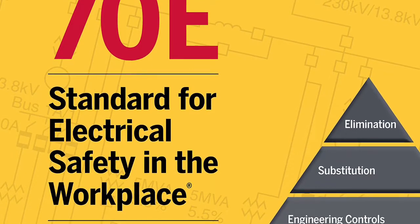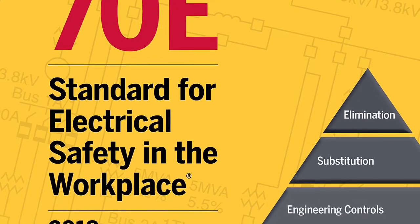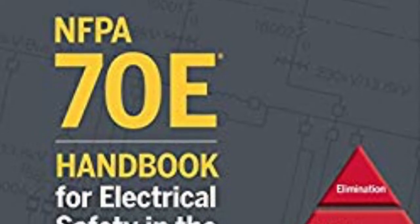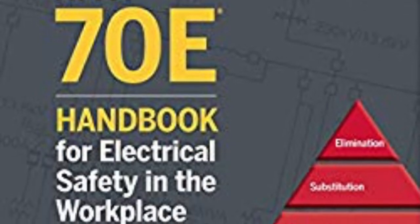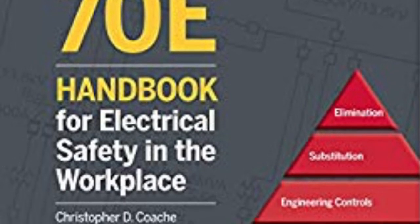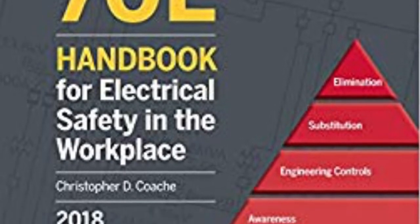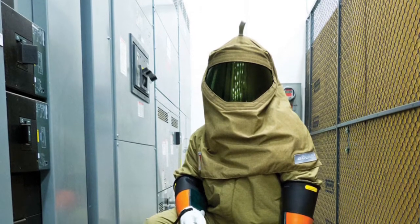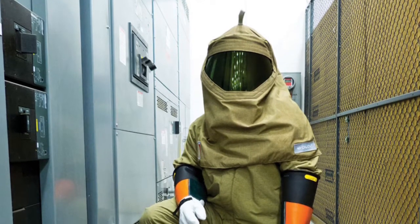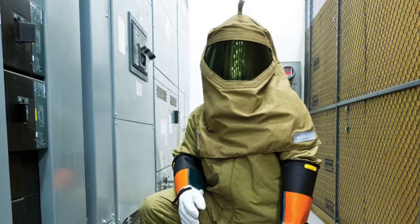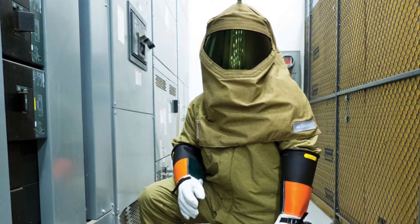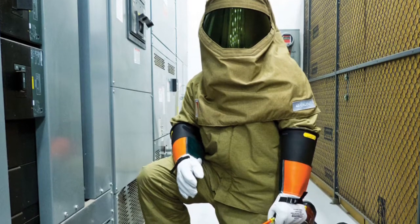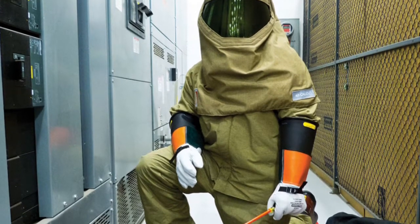The NFPA 70E and important charts and tables can be found in the safety reference job on Procore. The NFPA 70E handbook adds commentary and tries to explain some of the sections of the standard and also contains pictures. An arc flash suit is a complete arc-rated clothing and equipment system that covers the entire body except for the hands and feet. Hands and feet must be covered by adequate arc fault protective equipment.